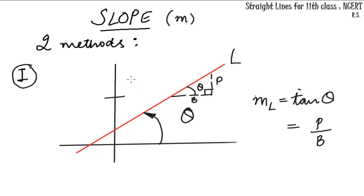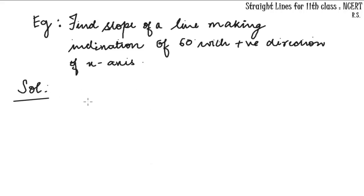Let's see one example for a line making an inclination with positive direction of x-axis. According to the question, we make up the Cartesian system, then draw the line here. The angle the line makes with positive direction of x-axis is theta, which is given to be 60 degrees.